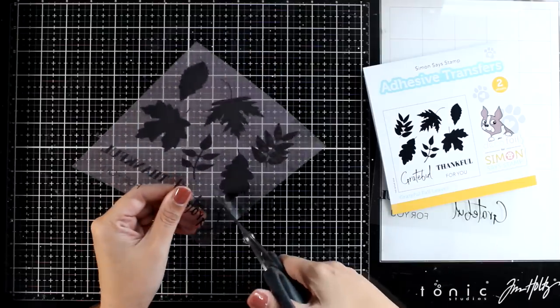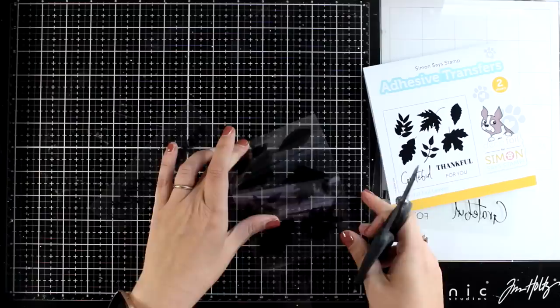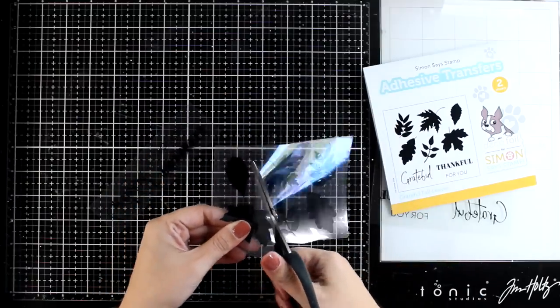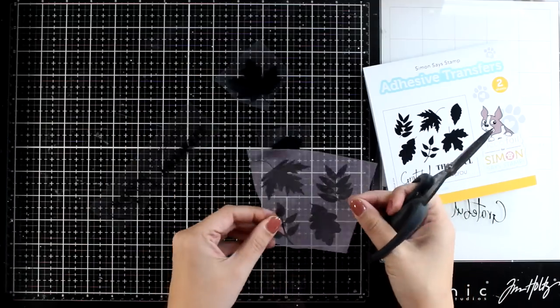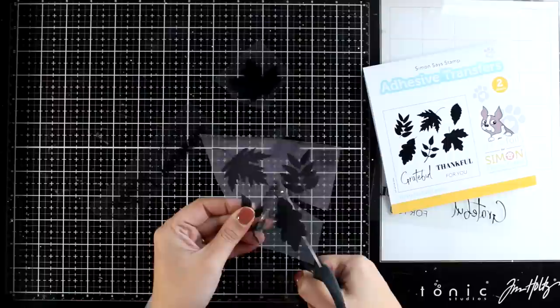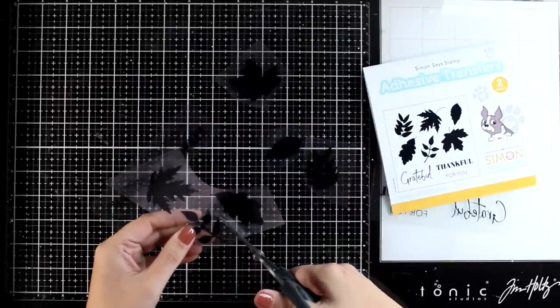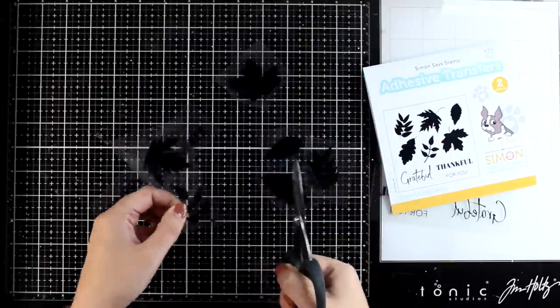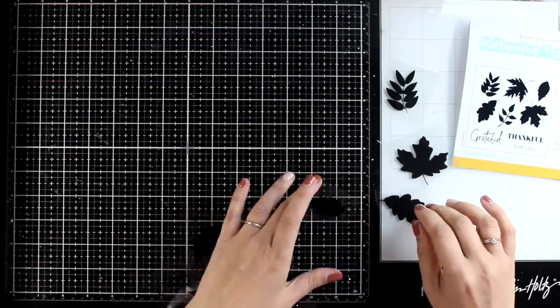I'm going to use my scissors and separate the images that I want to work with, just to make sure that I don't make a mess with the rest of the designs. So as you can see, you get six different designs of leaves as well as a couple of sentiments, and you get the whole design twice. I'm just choosing three of the leaves that they don't look alike, just to get different shapes and sizes.